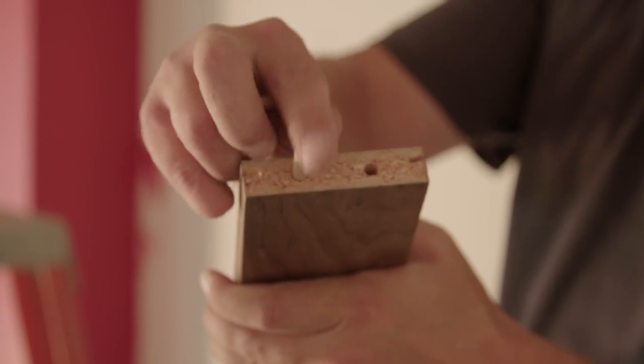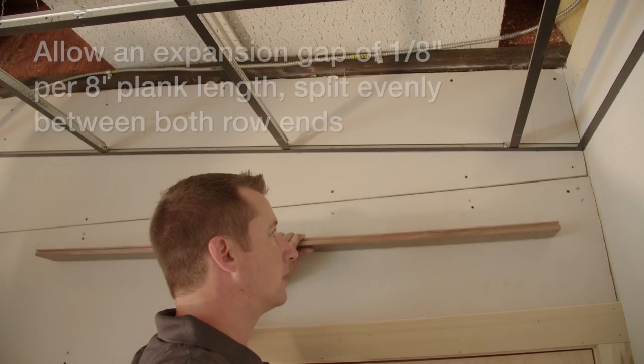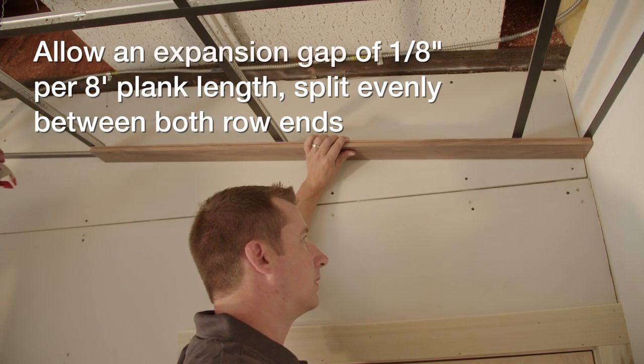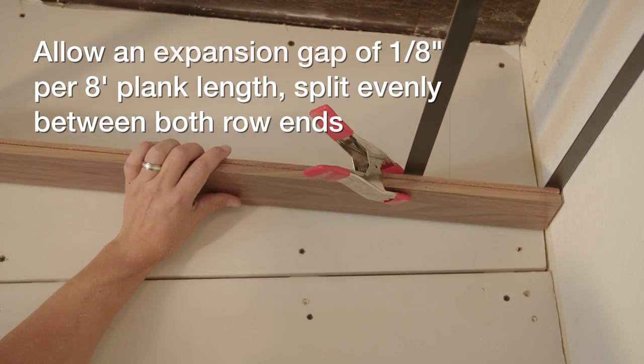On the opposite plank end, insert two dowels into the pre-drilled guide holes. Place the first plank at the required expansion gap from the end wall. Here it's one-eighth inch, and clamp the plank into place.